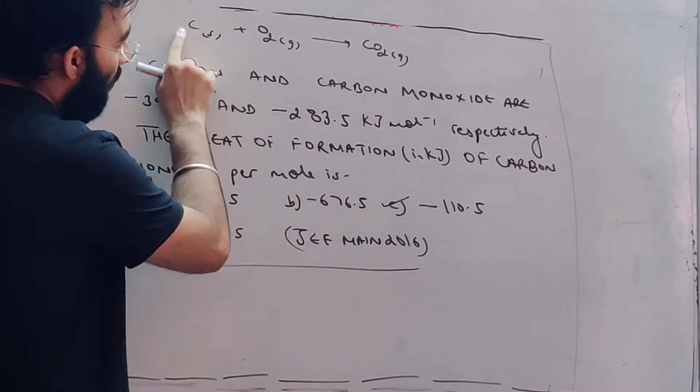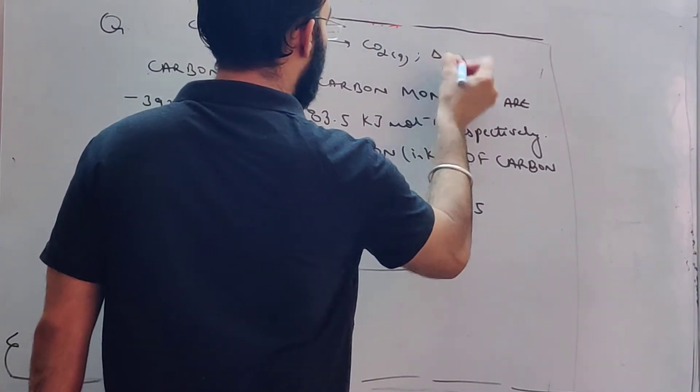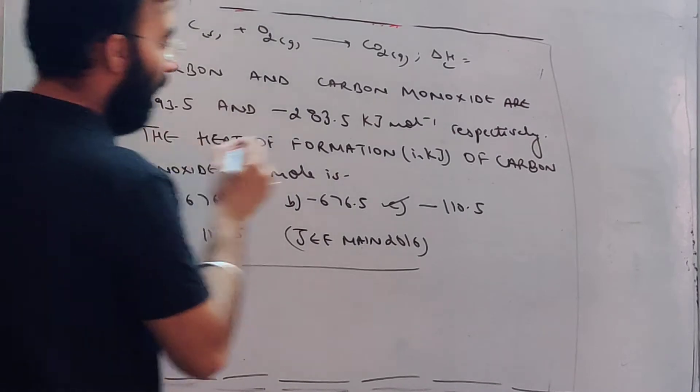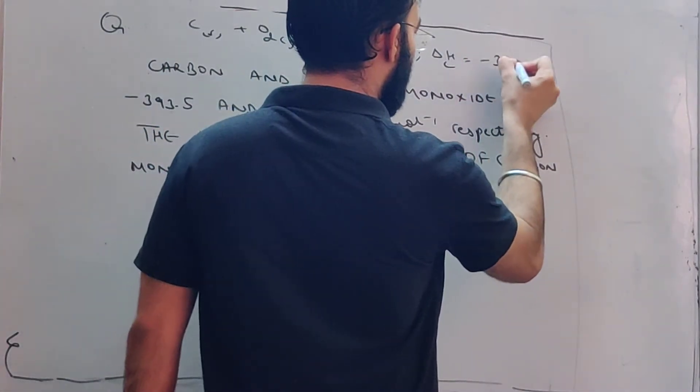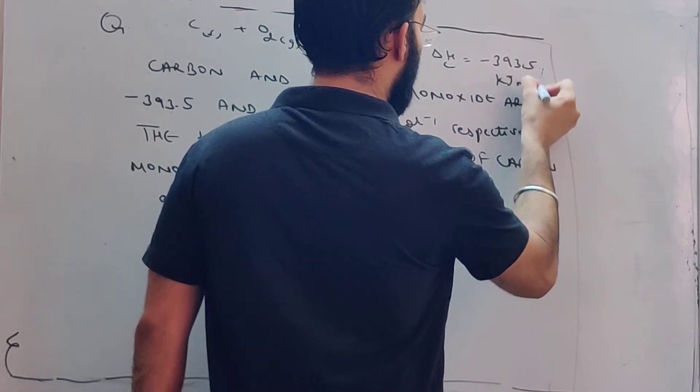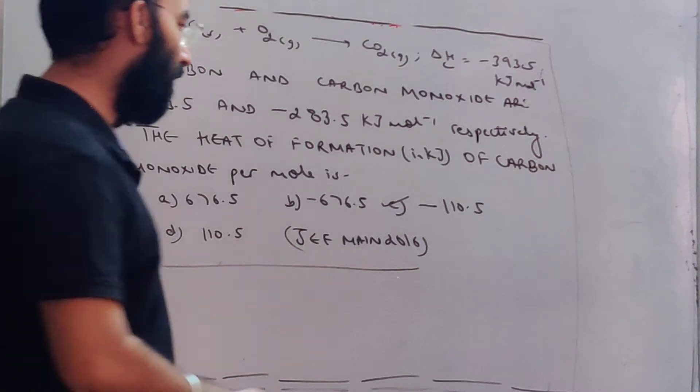Now, let's see that carbon has one mole. So, heat of combustion which is given for carbon, I have written as minus 393.5 kilojoule per mole. It is minus 393.5.